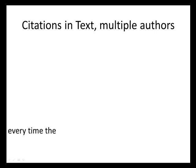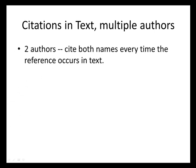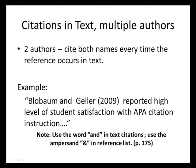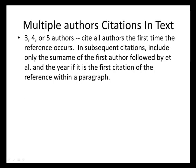Multiple authors, citations in text: we need to cite two authors each and every time the citation occurs within the body of our paper. Each time we cite Blowbob and Geller, we need to use their names and connect them with the word AND. We could also put their names within the parentheses, but we would also connect them with the word AND. The ampersand is only used in the reference list.